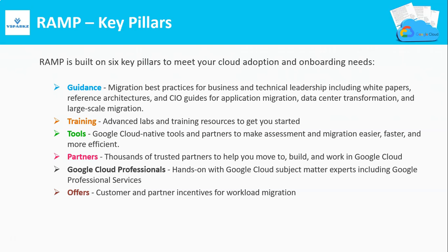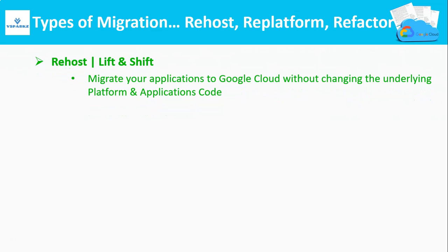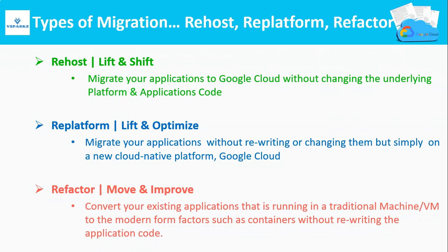Now we can see the types of migration that you can do with Google Cloud Platform. There are basically three different types of migration. They are Rehosting — that is Lift and Shift, Replatform — that is Lift and Optimize, and Refactor — that is Move and Improve. We will see one by one in the next few slides.